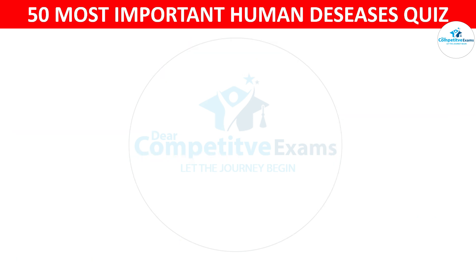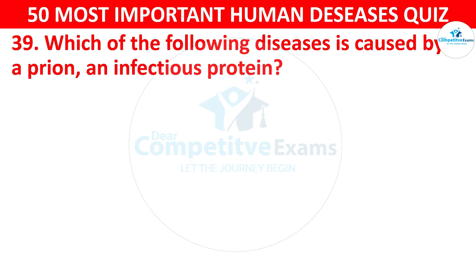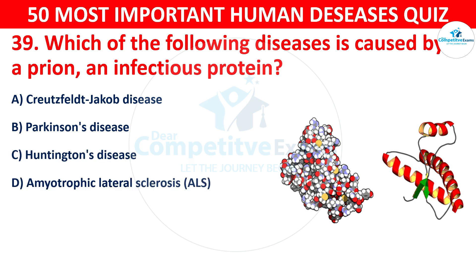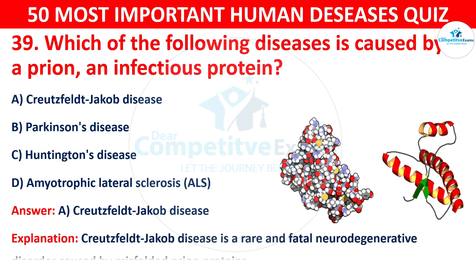Question 39: Which of the following diseases is caused by a prion, an infectious protein? Options: A) Creutzfeldt-Jakob disease, B) Parkinson's disease, C) Huntington's disease, or D) Amyotrophic lateral sclerosis (ALS). The correct answer is A — Creutzfeldt-Jakob disease. Creutzfeldt-Jakob disease is a rare and fatal neurodegenerative disorder caused by misfolded prion proteins.